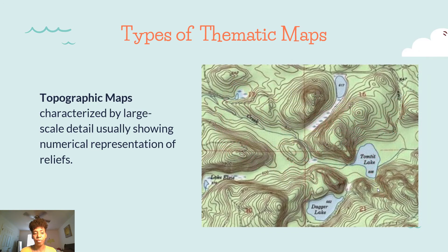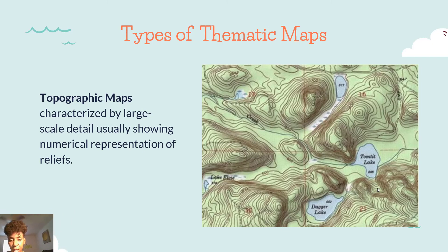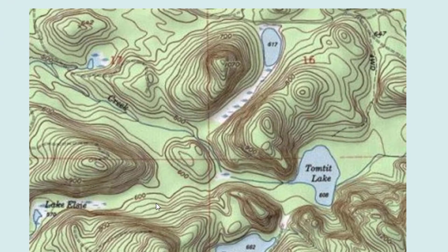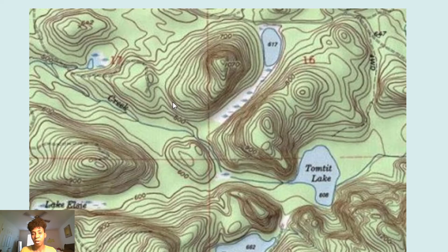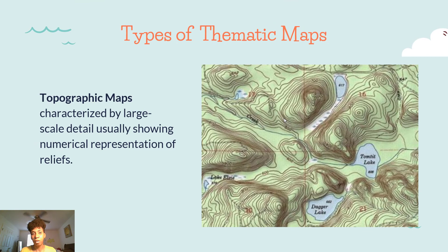Topographic maps are characterized by large-scale details showing numerical representation. As you see here, there are creeks, lakes, and different numbers that represent different types of elevation in terms of hills and valleys. Those in physical geography who are looking at that information would use this type of map to analyze that kind of data.